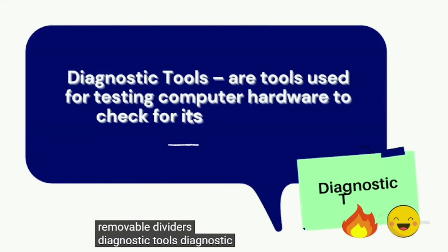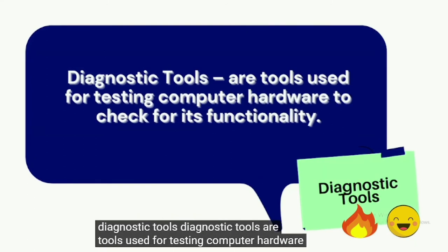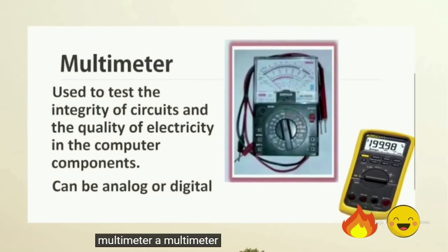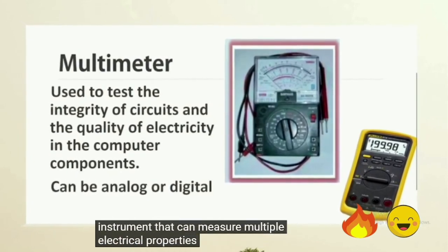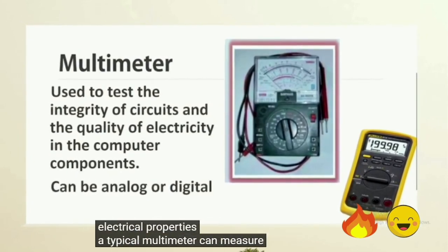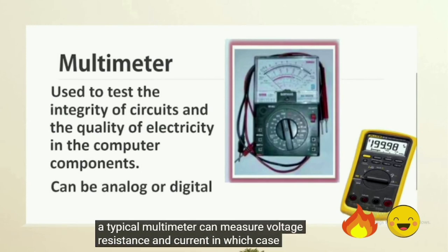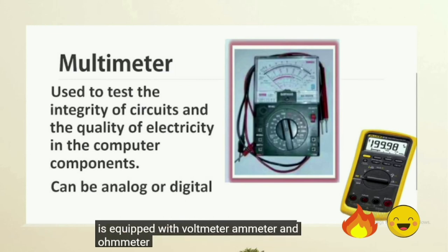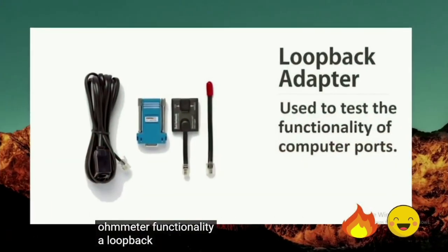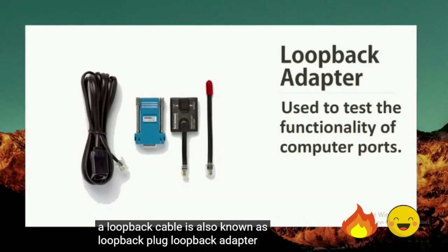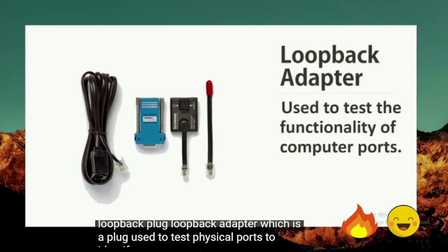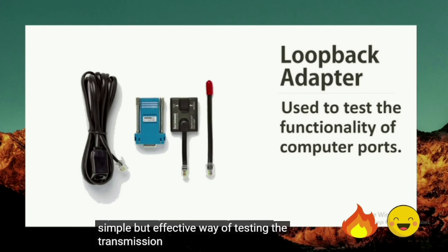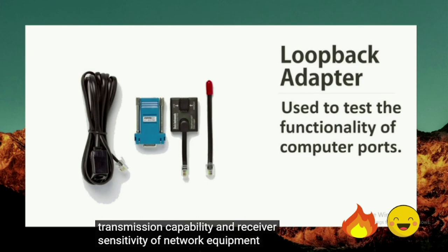Diagnostic tools are used for testing computer hardware to check for its functionality. A multimeter is a measuring instrument that can measure multiple electrical properties including voltage, resistance, and current, also known as a volt-ohm-milliammeter, equipped with voltmeter, ammeter, and ohmmeter functionality. A loopback cable, also known as a loopback plug or loopback adapter, is a plug used to test physical ports to identify network issues, providing a simple way to test transmission capability and receiver sensitivity.